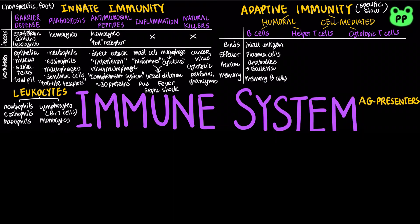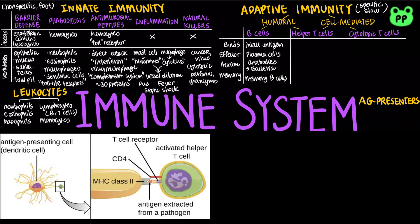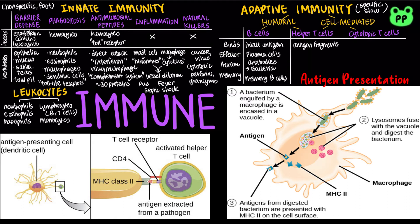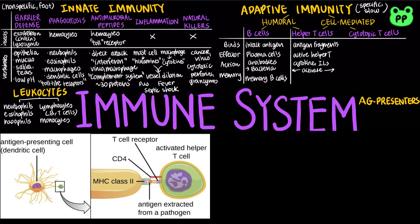Helper T cells help mediate both the humoral response and the cell-mediated response. They bind to antigen fragments presented on a host cell. These antigen fragments are bound to cell surface proteins called MHC molecules, which stands for Major Histocompatibility Complex. In infected cells, MHC molecules bind and transport antigen fragments to the cell surface, a process known as antigen presentation. When helper T cells bind to antigen fragments, more helper T cells are activated. Activated helper T cells secrete cytokines and interleukins that activate both B cells and cytotoxic T cells, contributing to both humoral and cell-mediated responses. Helper T cells also give rise to memory helper T cells, allowing a faster immune response during second exposure to the pathogen.